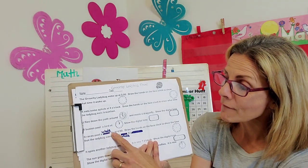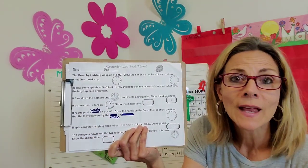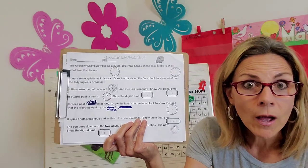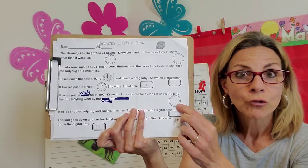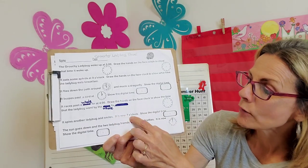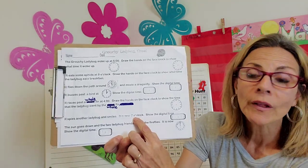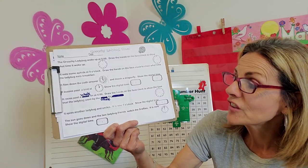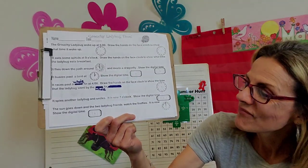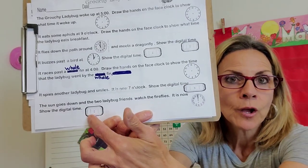It races past a whale fin at four o'clock. I noticed when I was reading this that it said shark. So, I just scratched that out and wrote whale. Draw the hands on the face clock to show the time that the ladybug went past the whale fin. So, again, draw the hands on the clock. It spies another ladybug and smiles. It is now seven o'clock. Show the digital time. So, you're matching, matching. That's the word o'clock. That's another way to say time on the hour. The sun goes down and the two ladybug friends watch the fireflies. Remember the ending of the story ended with the fireflies at night. It is now and here's your time and you're just going to write the digital time.